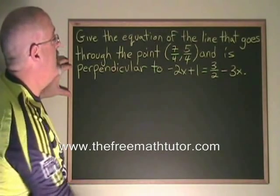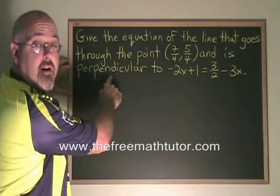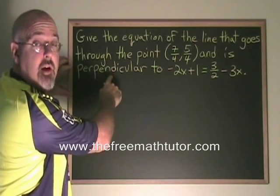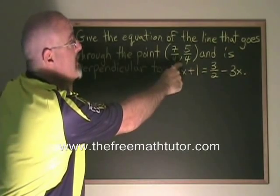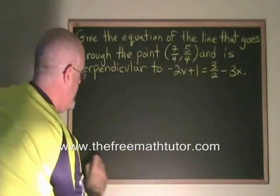Any line that is perpendicular to a vertical line has to be a horizontal line, and the only horizontal line that would go through this point would be the line y equals 5/4. I have an answer.